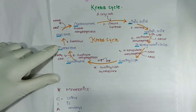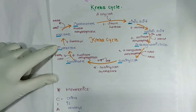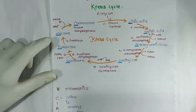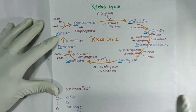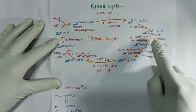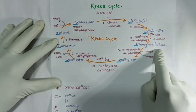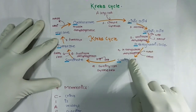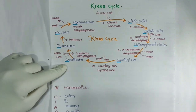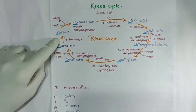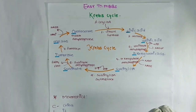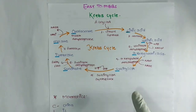Now here we can see the enzymes in the Krebs cycle. Citrate — enzyme is Citrate Synthase. Isocitrate — enzyme is Isocitrate Dehydrogenase. Alpha-ketoglutaric acid — enzyme is Alpha-ketoglutarate Dehydrogenase. Succinyl-CoA — enzyme is Succinyl-CoA Synthetase. Succinate — enzyme is Succinate Dehydrogenase. Fumarate — enzyme is Fumarase. Malate — enzyme is Malate Dehydrogenase.